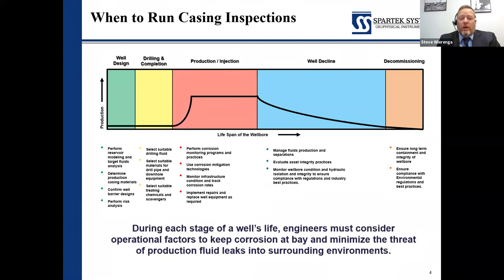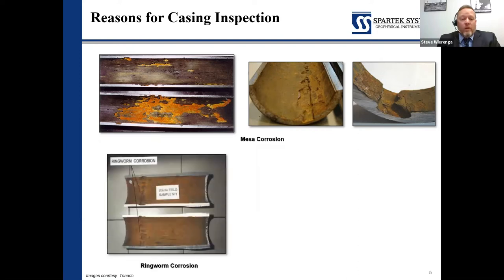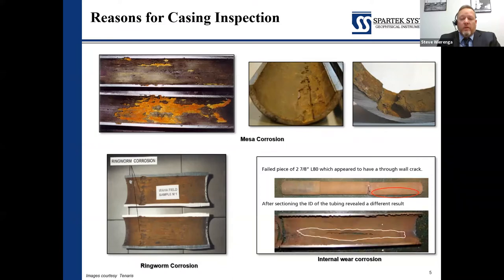During the entire lifespan of a well, engineers and production teams really do need to consider the operational factors and make sure we keep corrosion at bay or minimize the threat as best we can. Our friends at Tenera shared some pictures showing extreme wear and erosion conditions, including internal ringworm that can happen internally and externally. On a two and seven-eighths tubing — not quite within the realm of this tool — but the same thing happens with larger casings, where internal wear and external issues often combine.